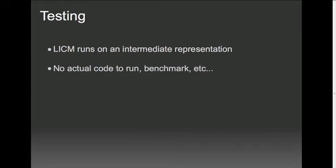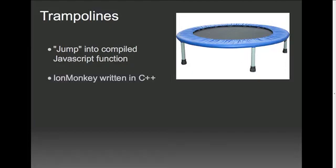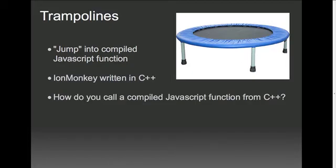So I did this, and I saw that it worked in the control flow graph, and I wanted to test it and benchmark it and see the improvement in performance. But I quickly saw that LICM runs on an intermediate representation, and IonMonkey didn't yet produce any actual code to run and benchmark. So I switched gears for a while, and I started working on getting IonMonkey to run its own code. And one of my big parts in doing that was a piece called the trampoline. The idea of a trampoline is we want to jump from the IonMonkey engine into a JavaScript function.